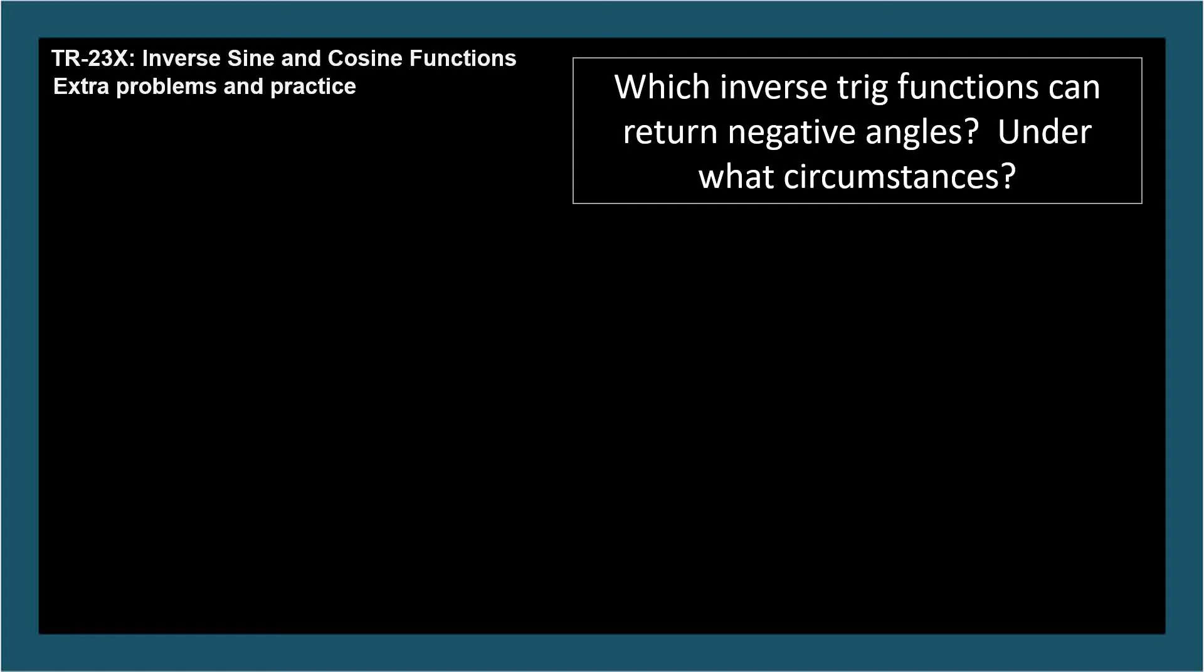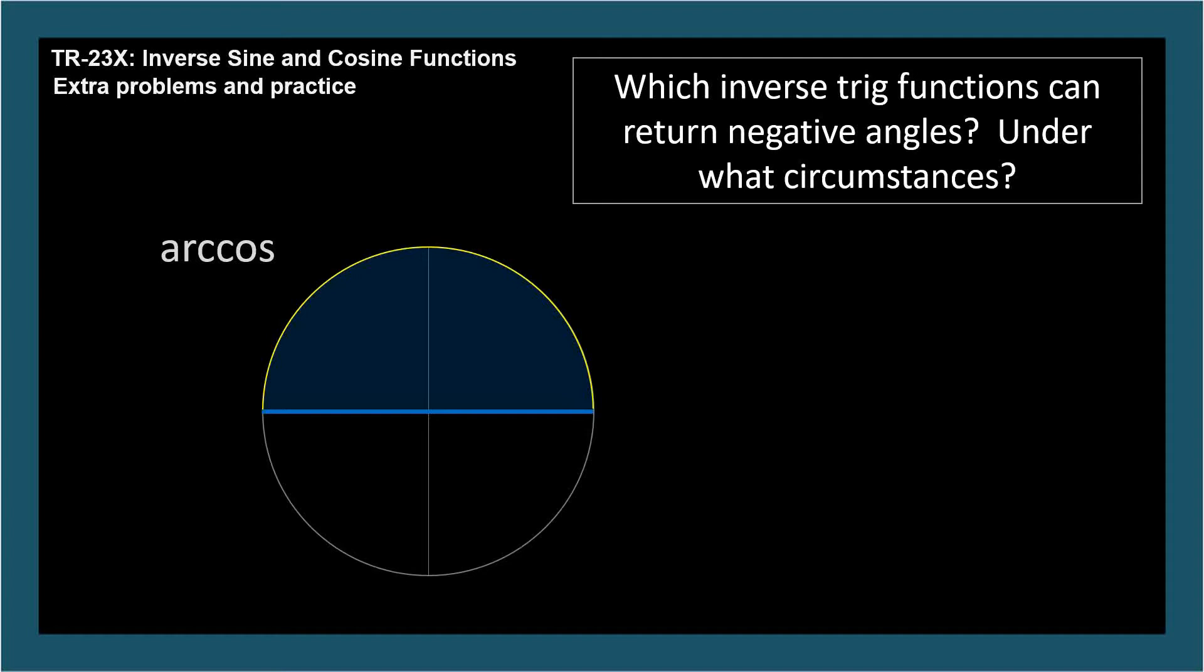Let's consider the inverse cosine first. When inverse cosine, or arccosine, is referenced, please see the circle in your head. The domain for arccosine is negative 1 to 1, values on the x-axis as shown in blue. The range is the set of angles between 0 and pi radians as shown on the yellow semicircle. All of these angles are non-negative, so arccosine never returns negative angles.